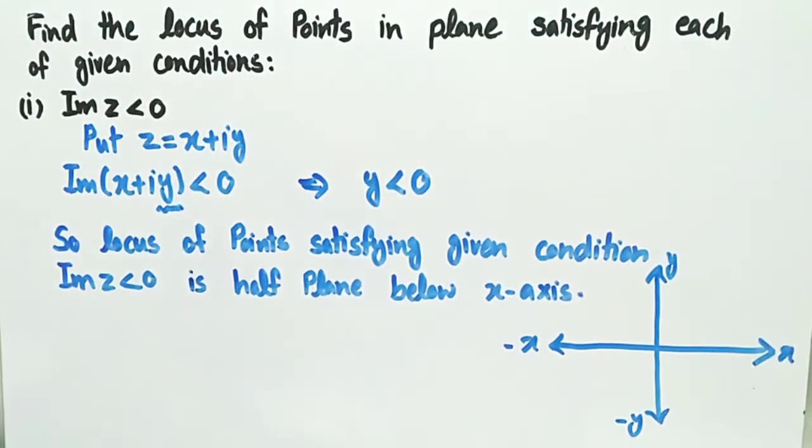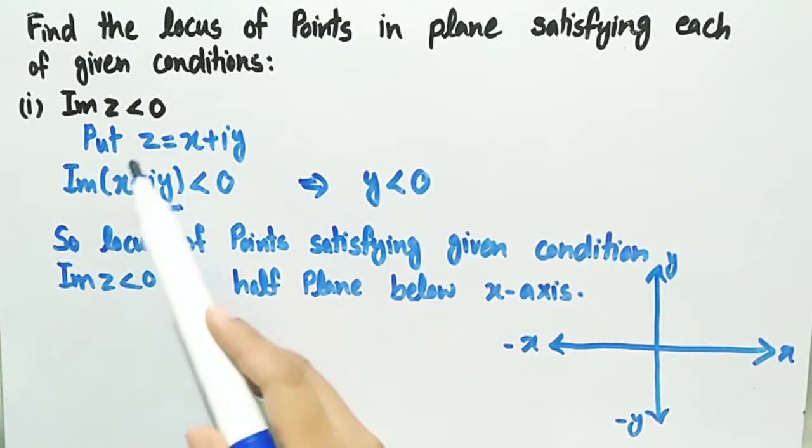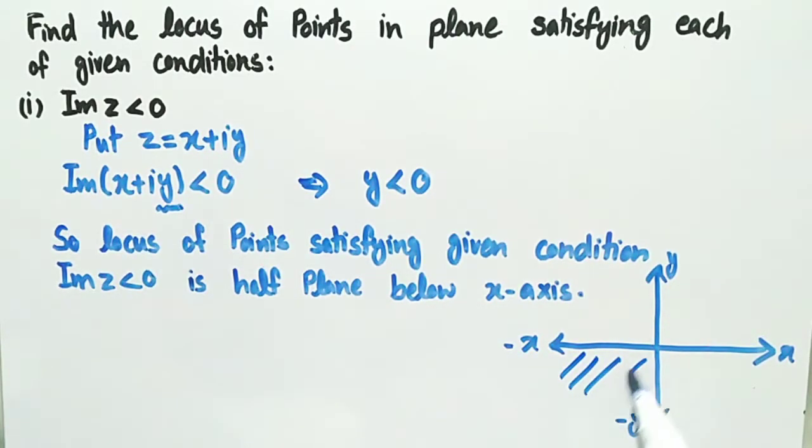So locus of points satisfying given condition imaginary part of z less than zero is the half plane below x-axis. As we can see that y is less than zero, the locus contains all negative values of y.